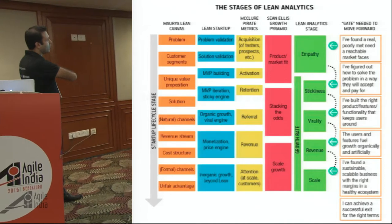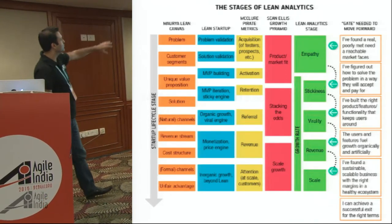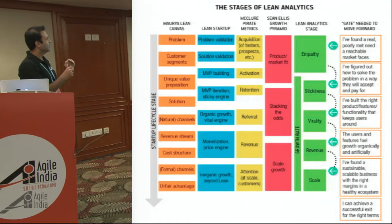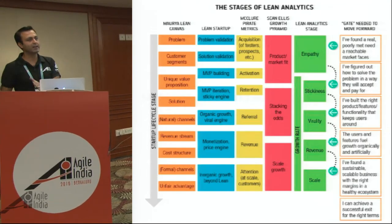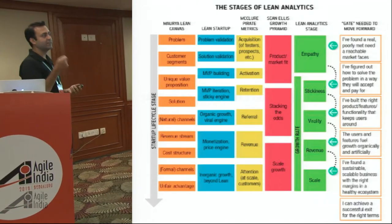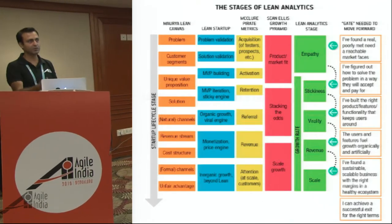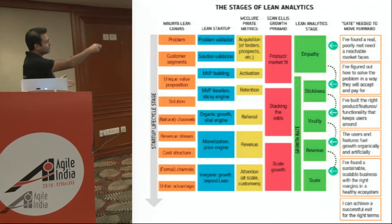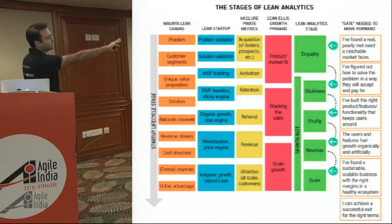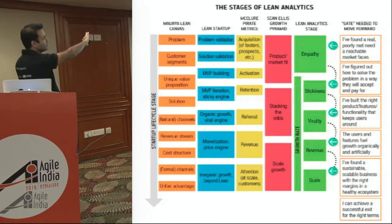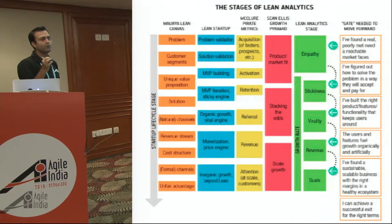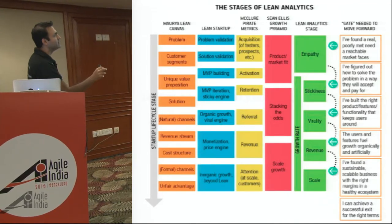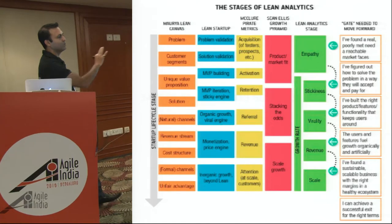There are multiple frameworks and this is where they all converge. Ash Maurya's lean canvas talks about problem, customer segment, unique value proposition. Then there is the lean startup framework, which says problem validation and solution validation: once you have a problem, validate if it's a genuine problem; once you have a solution, figure out if it will work — make an MVP, learn, go through it. That same thing maps to lean analytics, which says empathy is the first stage. You have to find a problem you can really solve, and once you've figured out a poorly-met need that can reach a set of market segments, you've crossed the empathy stage.